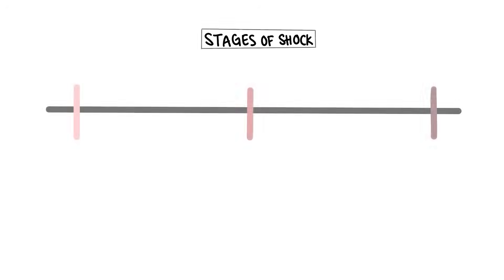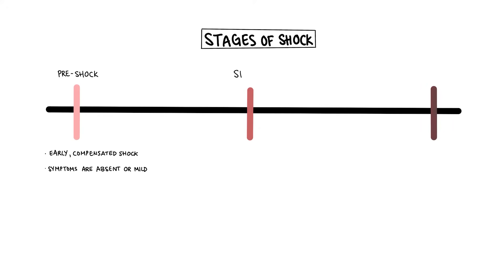There are also stages of shock, where pre-shock, you have early compensated shock, where symptoms are absent or mild. Then shock, the compensatory mechanisms become overwhelmed and symptoms of organ dysfunction begin to appear. Then you have multi-organ dysfunction, where you have progressive shock that leads to irreversible organ damage and death.